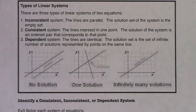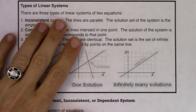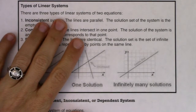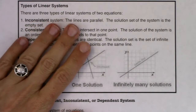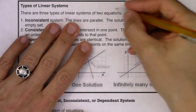Hey Math 31, welcome to example 3. We're going to take a look at the three different types of linear systems. There are three types of linear systems of two equations.